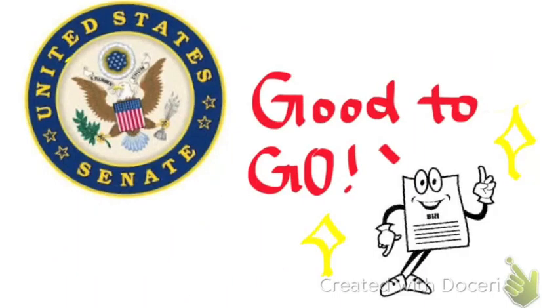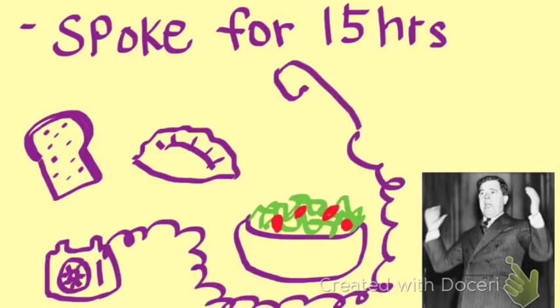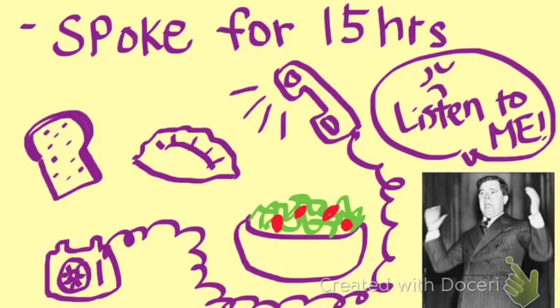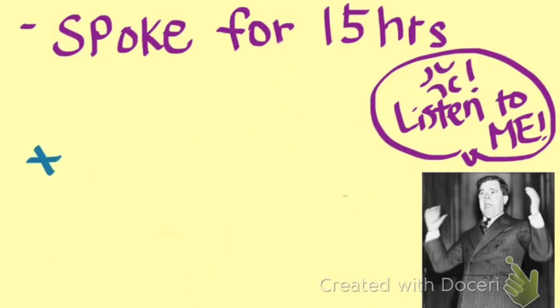This guy, Senator Huey Long, stands and spoke for 15 hours straight. He went over his secret recipe of cornbread, pot, liquor, salad, and it all started with a telephone directory. This is a tactic called filibuster, which stands for talk to death.